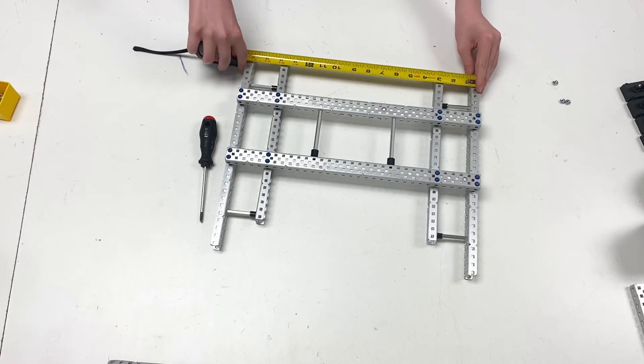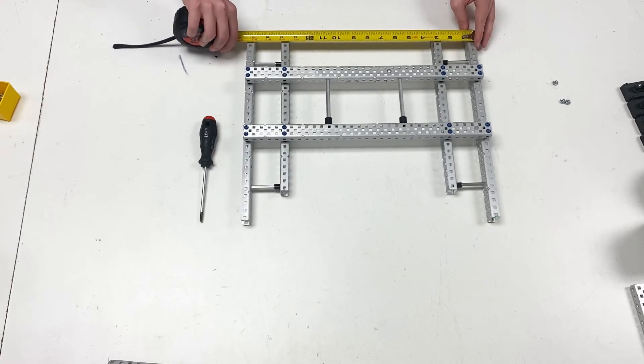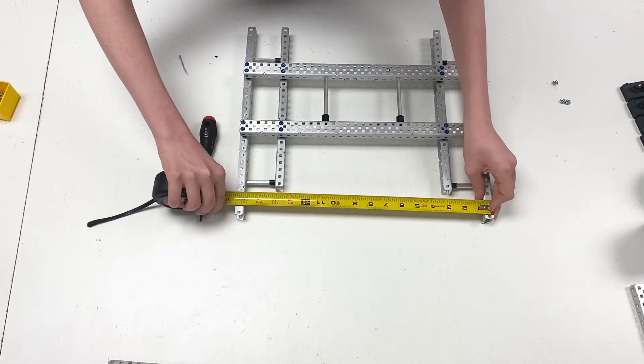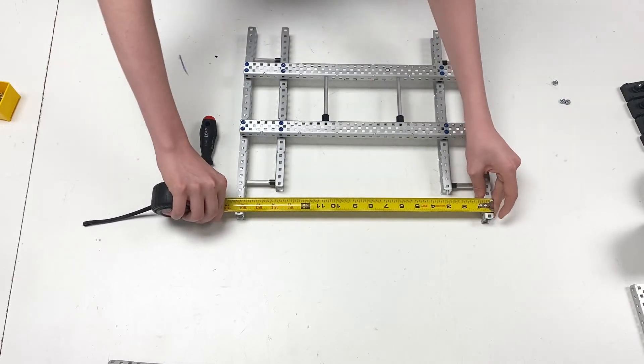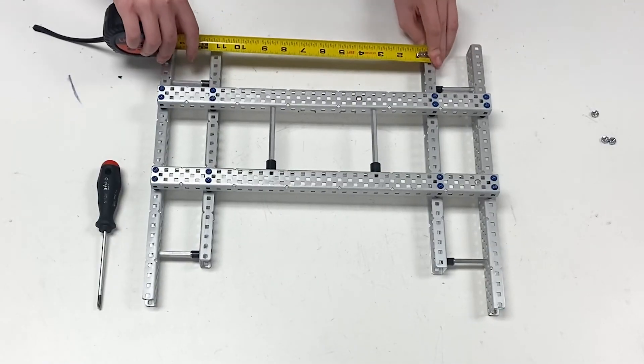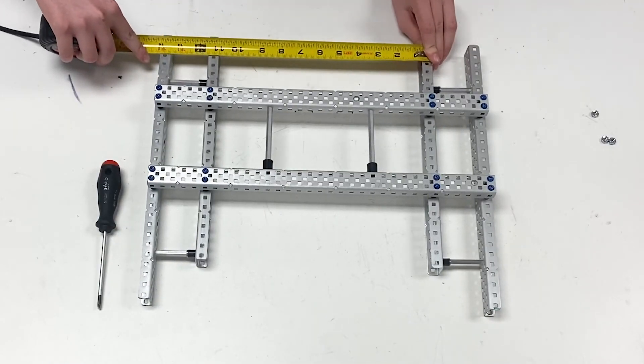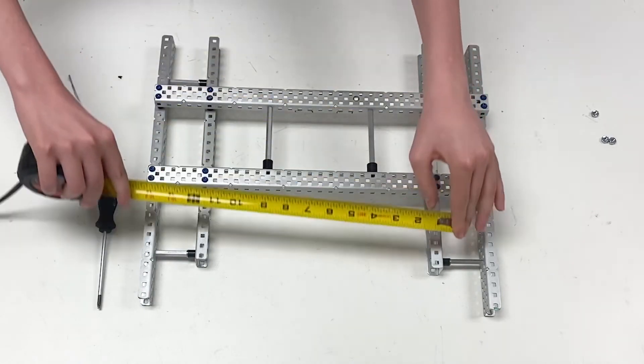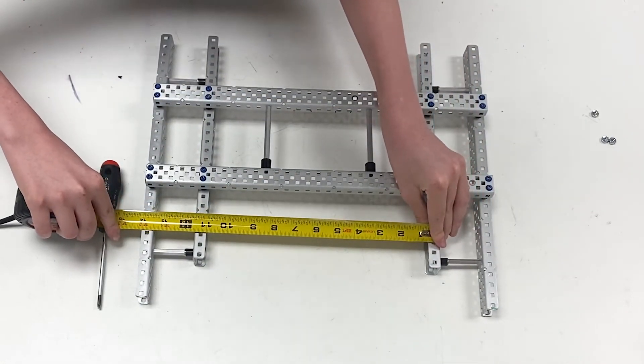For me, this is 16 and a half from the end front. And I go to the top and it is also 16 and a half. Now for the inside ones, you do the same thing. For me, it's 11 and a half plus a tick. And up top, it's 11 and a half plus a tick.